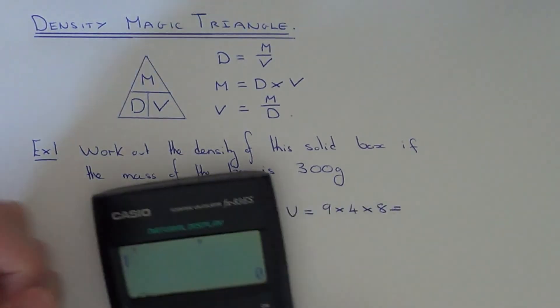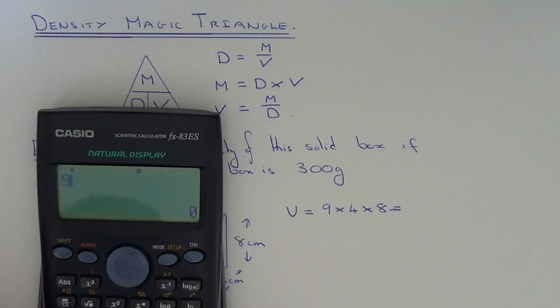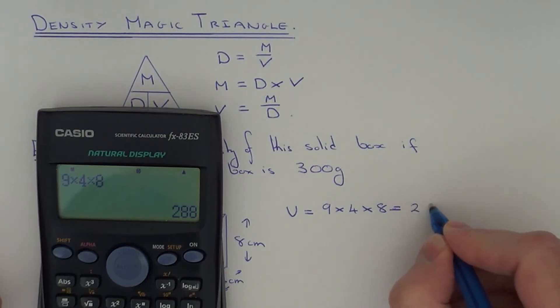If you just type this on your calculator, 9 times 4 times 8, that's 288cm cubed.